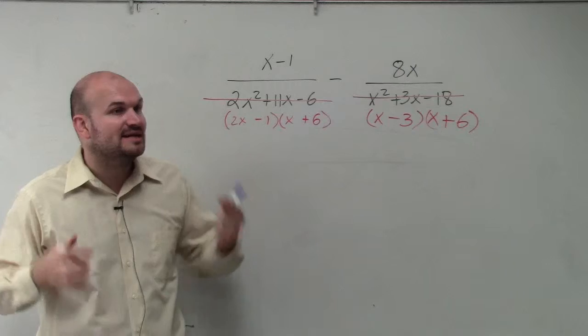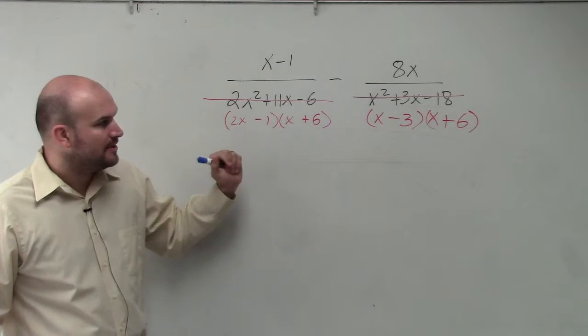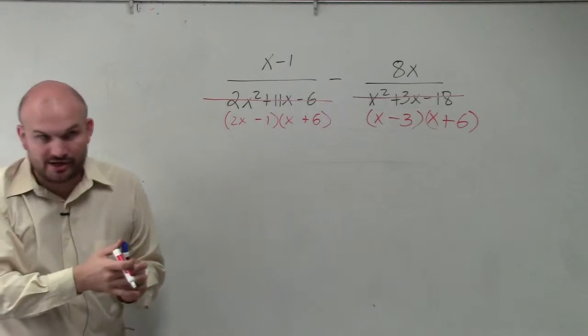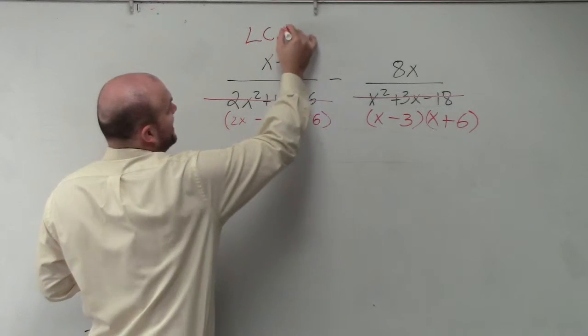What's nice about their factored form is now I can identify what the LCM is. So the least common, because I can't subtract these because they're not the same, right? You guys agree? They're not the same. I can't subtract them. So what I need to do is write down the LCM.